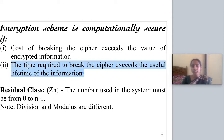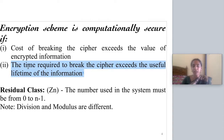The second property is that the time required to break the cryptanalysis must be more than the lifetime of the information. For example, if a message says 'you will be killed by 11 o'clock' and you encrypt and send it, it is computationally secure if the time to perform cryptanalysis on it exceeds 11 o'clock — meaning the information is no longer useful by the time it can be broken.